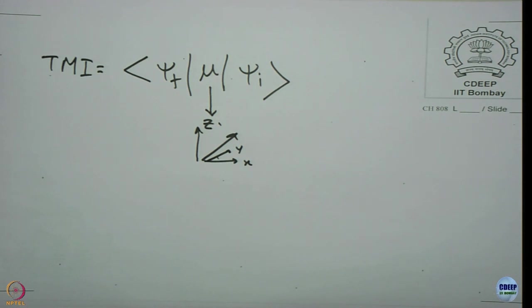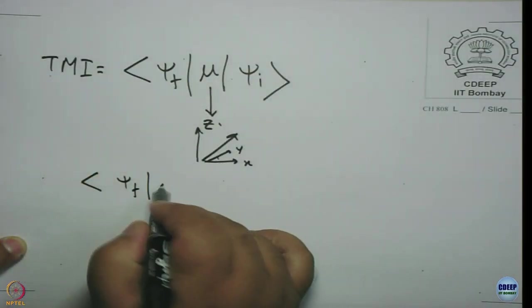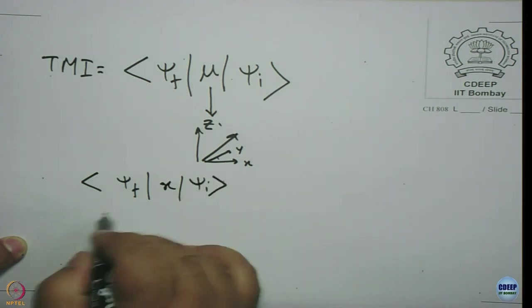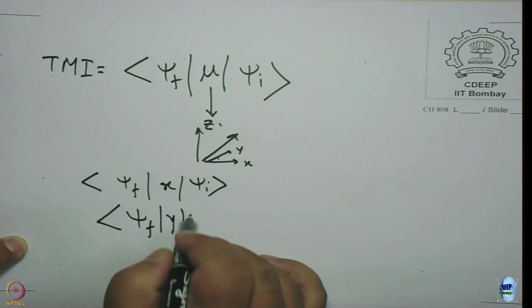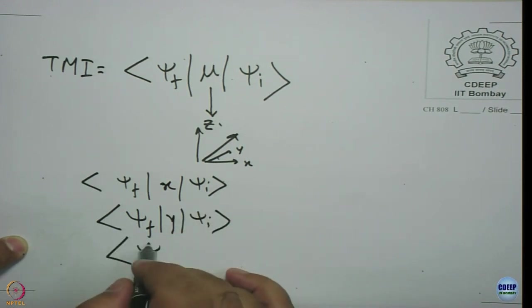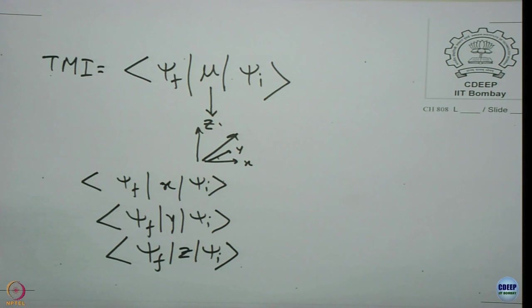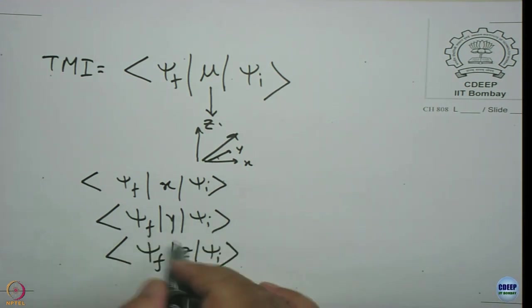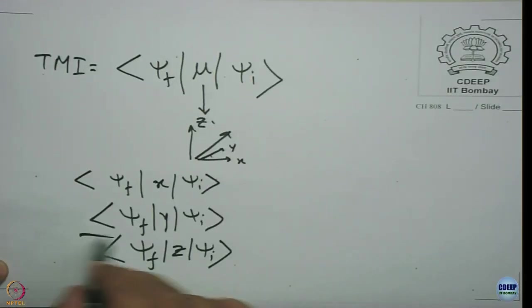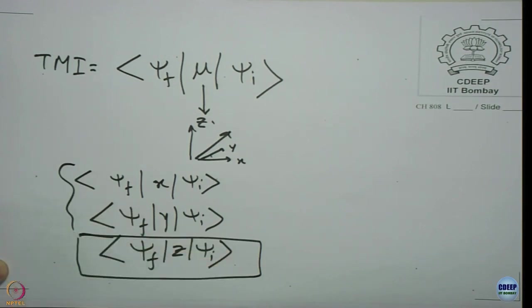When we say this transition moment integral is nonzero, we mean one of these three integrals — ∫Ψ_F* · x · Ψ_I dτ, or ∫Ψ_F* · y · Ψ_I dτ, or ∫Ψ_F* · z · Ψ_I dτ — has to be nonzero. For many transitions, only one of these is nonzero while the others may be zero.